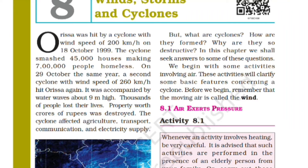Hello viewers, welcome back to our YouTube channel. In today's video we are going to read further from our previous video, where we read about the two cyclones that came in Orissa on 18th October and on 29th October, with speeds of 200 km per hour and 260 km per hour respectively, and what effect they caused on the people living there.